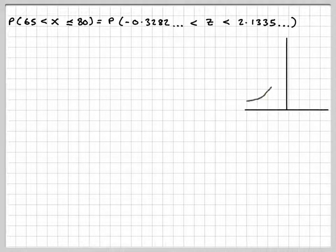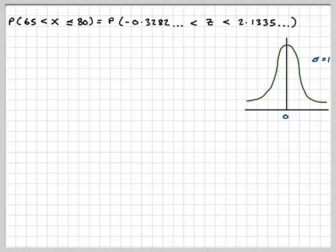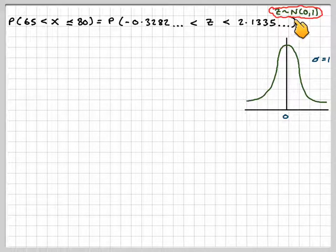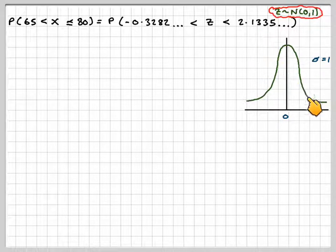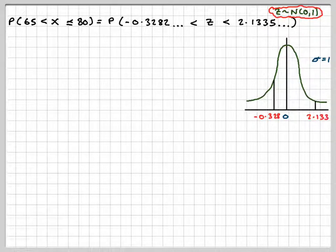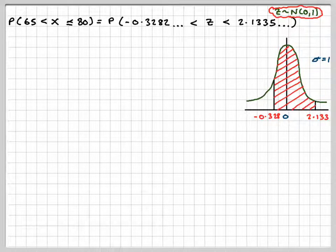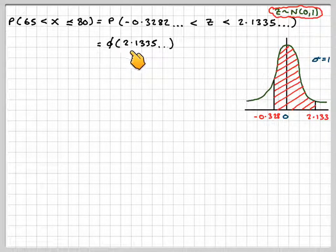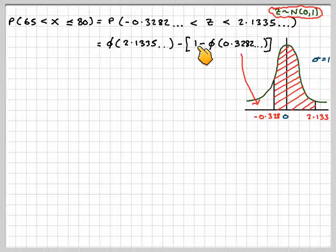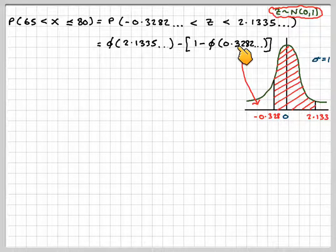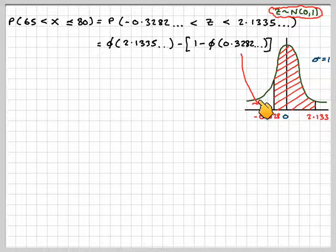So I like to draw a graph because it shows me very clearly what I'm doing. Z is normally distributed with mean 0 and standard deviation 1. This value goes over here, and this value goes over here, and we need to shade the region. That's the region we need to find. So it's going to be Φ(2.13), that means look up in the tables 2.13, and we'll take away this region here, which we get by doing 1 minus Φ(0.3282). This is using the symmetrical properties of the table. That gives me that area there.